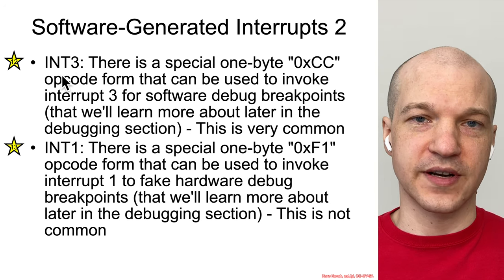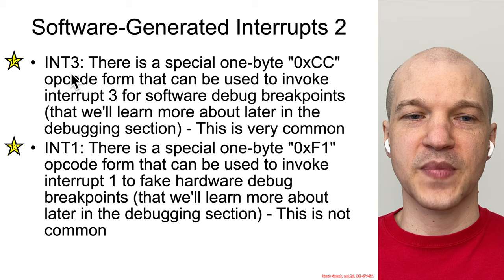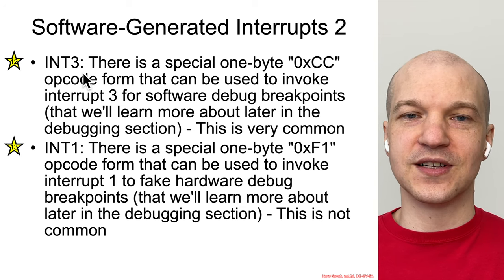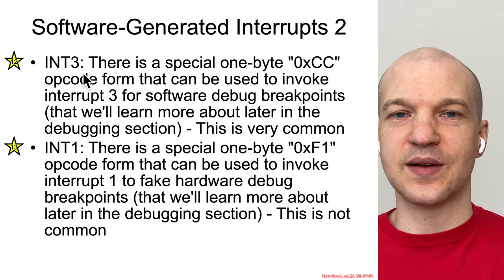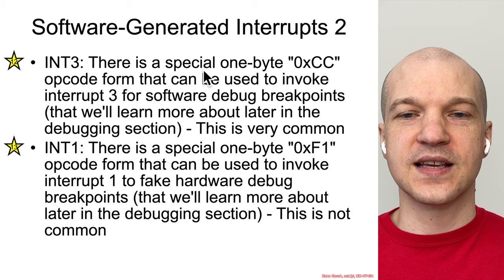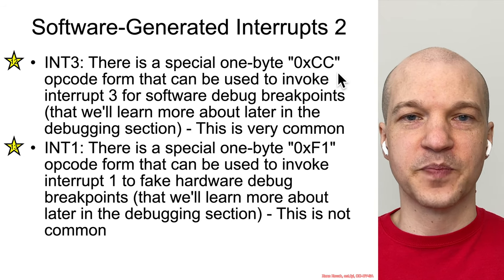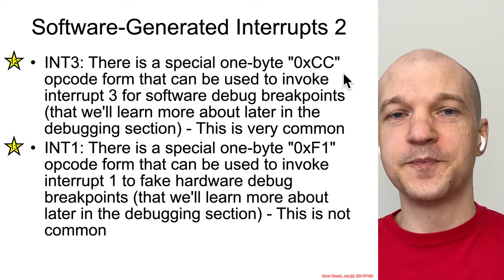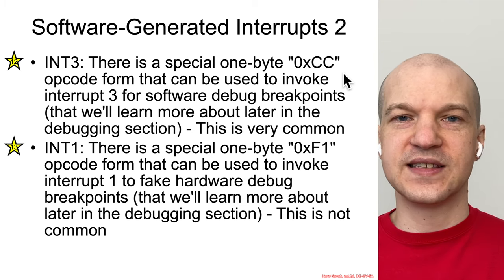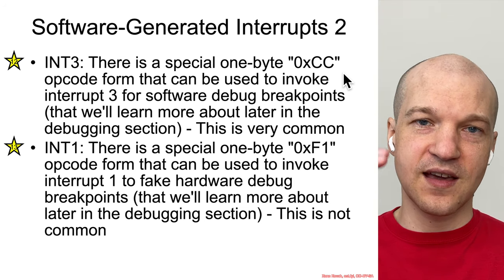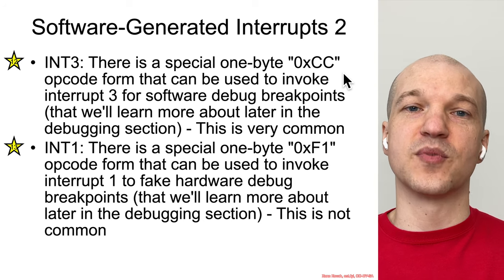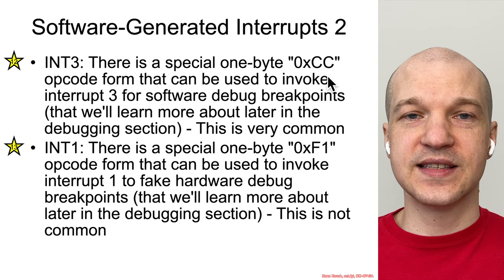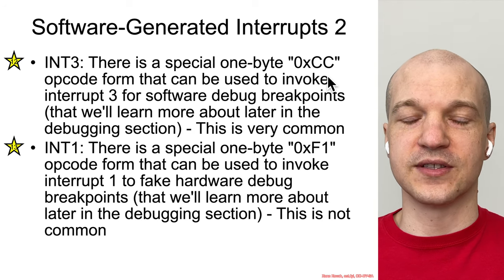There are also some more relevant software-generated interrupts, in particular int3. Int3 — not 'int space 3' — is a specific assembly instruction, and it took me a long time to realize it was literally a completely separate assembly instruction mnemonic. Int3 has a special one-byte form, hex CC, and you will very frequently see this being used as a software breakpoint. Sometimes if you see someone throwing in manual hex CCs, what they're doing is specifically saying: if the RIP ever points at this data, treat it like a software breakpoint and invoke a debugger. So CC is always going to be the software breakpoint — if you're in a debugger, that's going to have the debugger catch it.